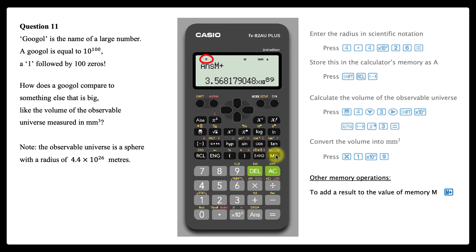To clear the value of memory M, or any other memory for that matter, press 0 and then store it as that value using shift and recall.